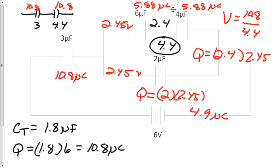And if I wanted to find the volts on these, I could take 5.88 divided by 6 and 5.88 divided by 4, and I'll get my volts on that 4 and the 6, and that would add up to be 2.45 volts.